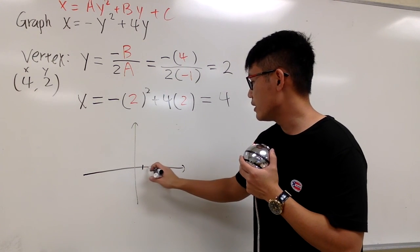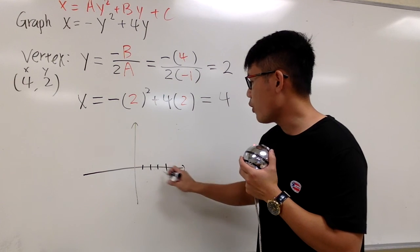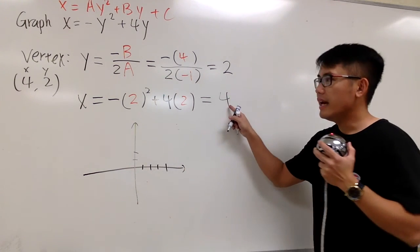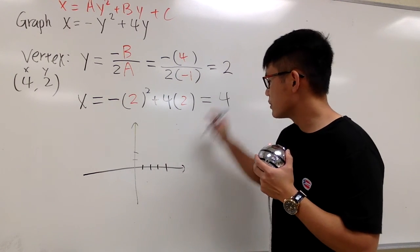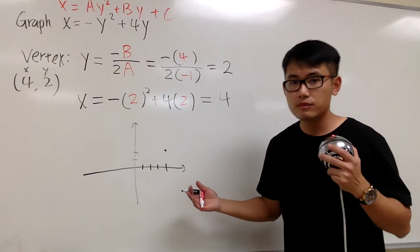I'm just going to plot the vertex. I will say this is 1, 2, 3, 4, and this is 1, 2. The x value is 4, and the y value is 2. So this is going to be the vertex.